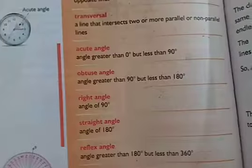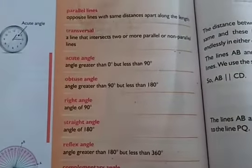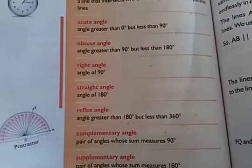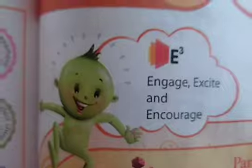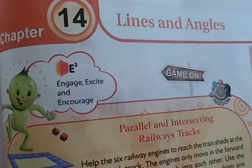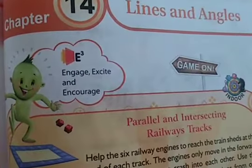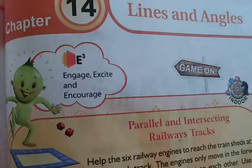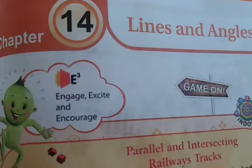Try to learn about these new words: parallel lines, transversal, acute angle, obtuse angle, right angle, straight angle, reflex angle, complementary angle, supplementary angle. This is about protractor and angles. Stay alert, stay healthy. Thank you. Have a nice day.